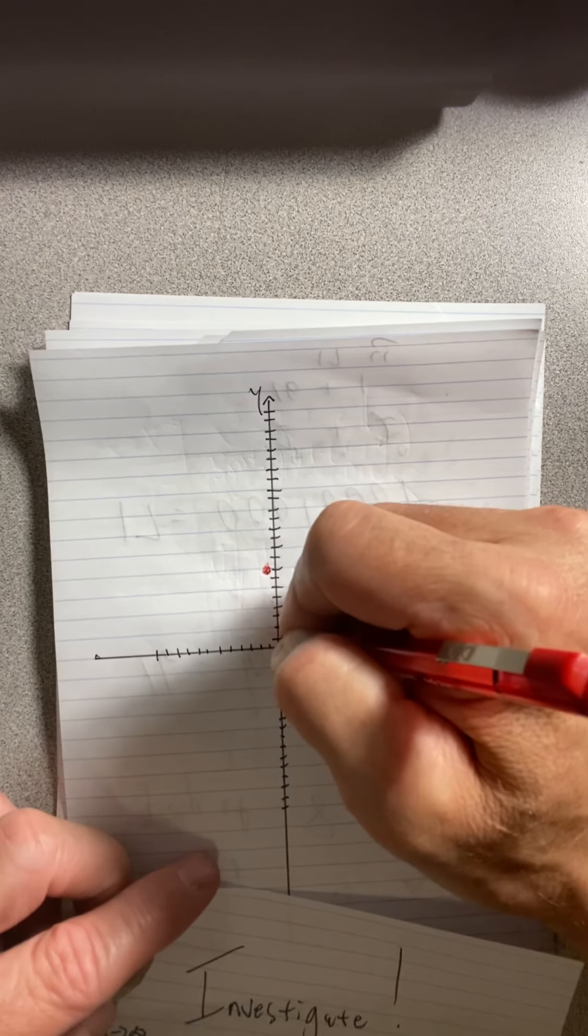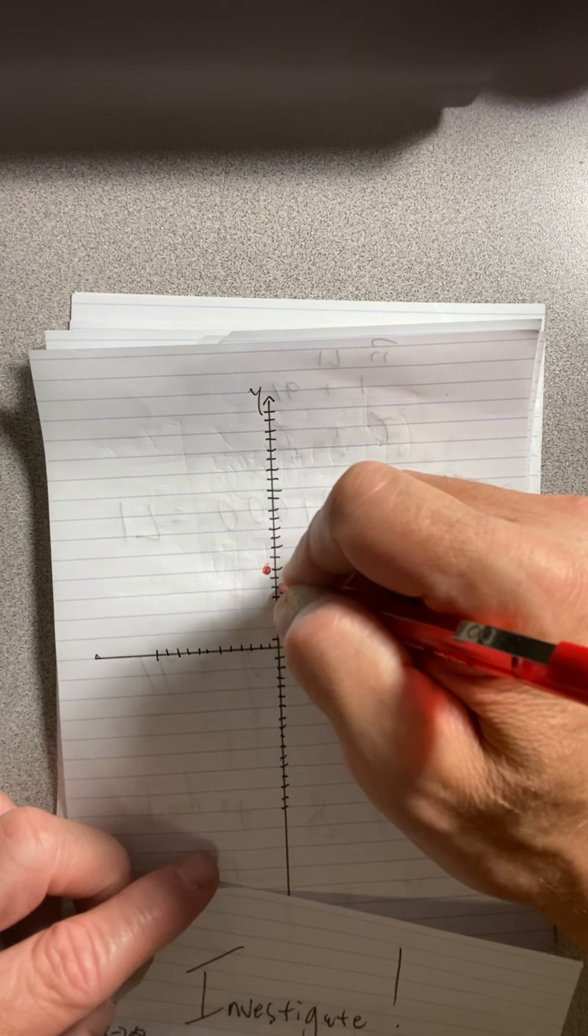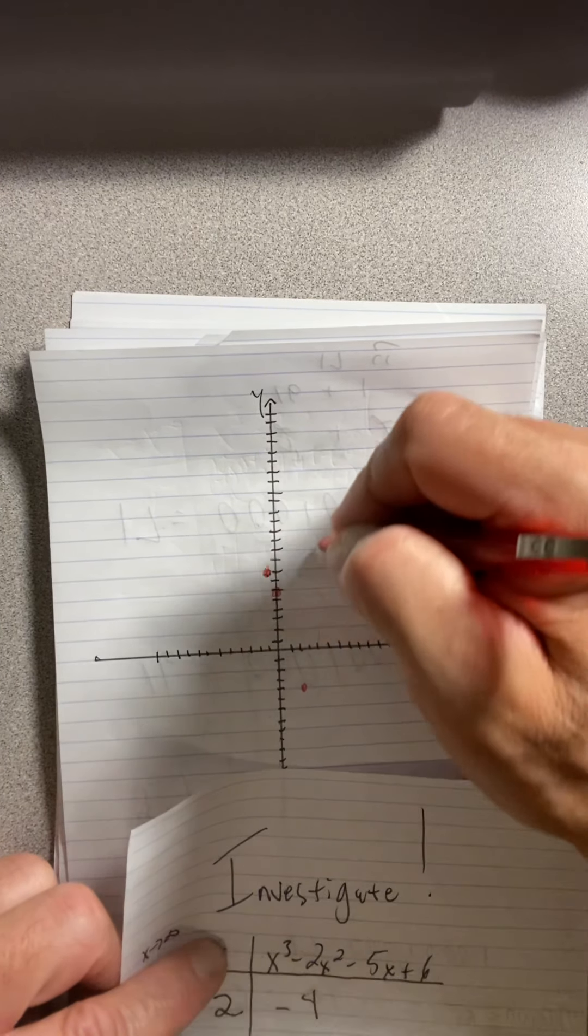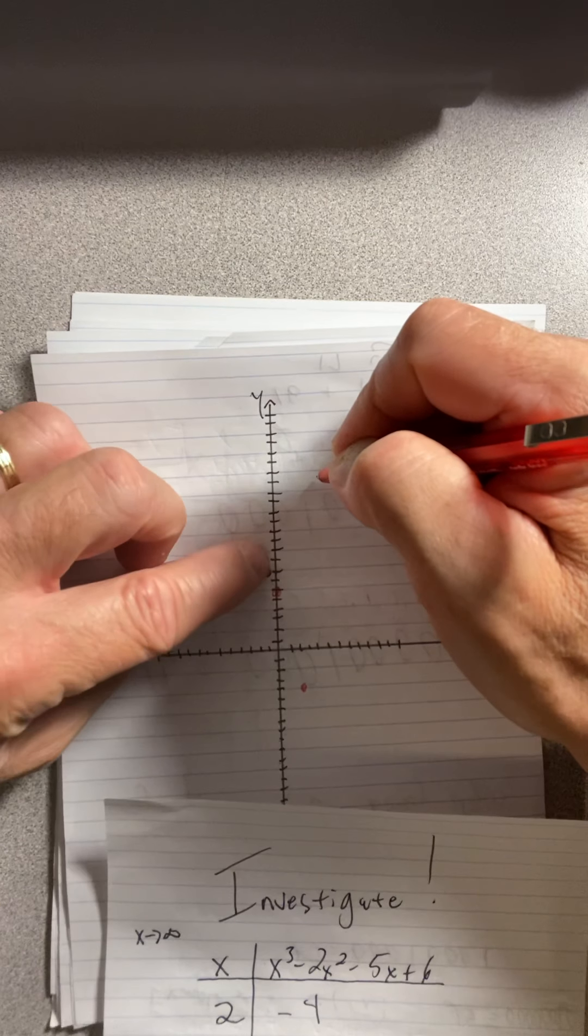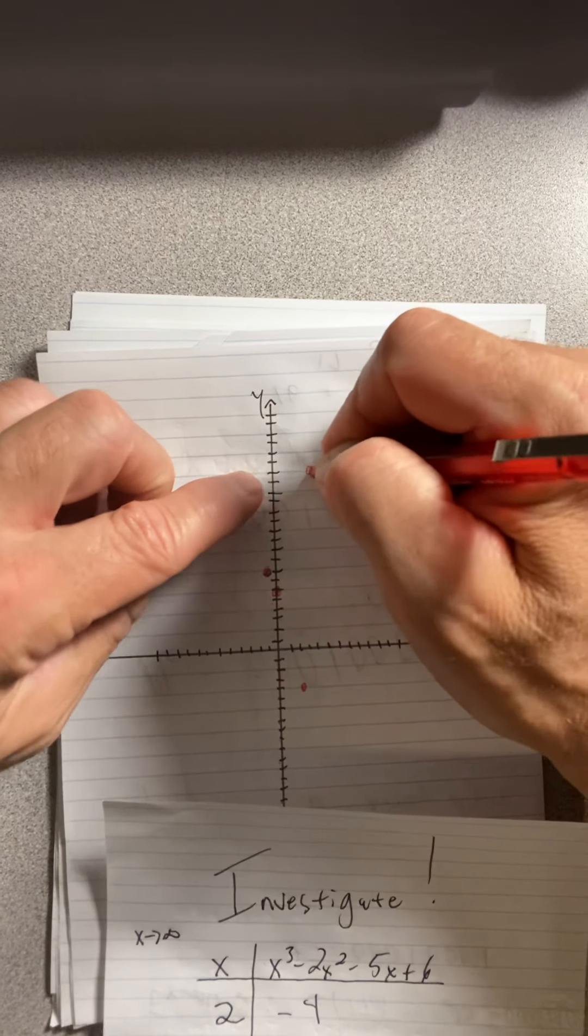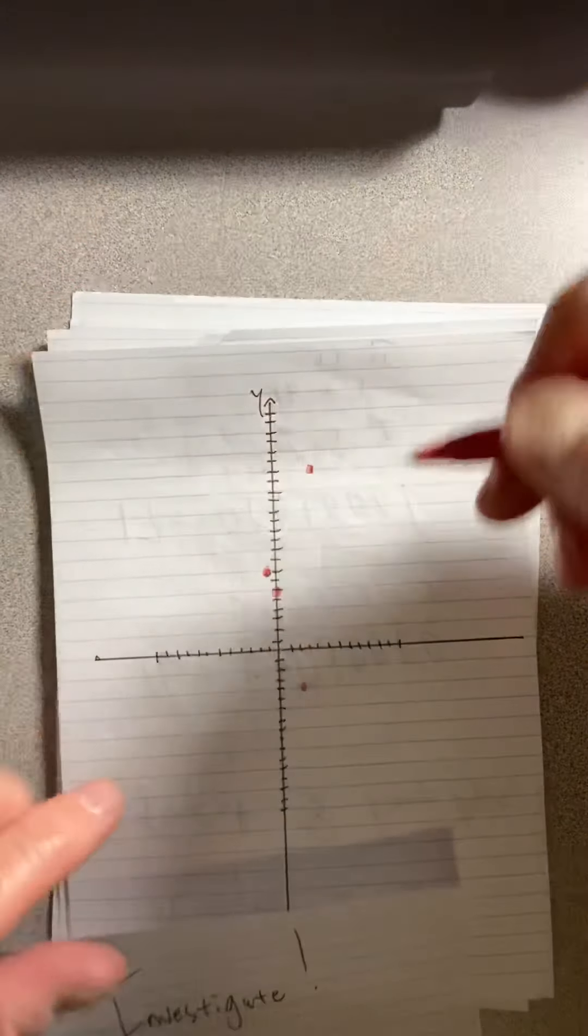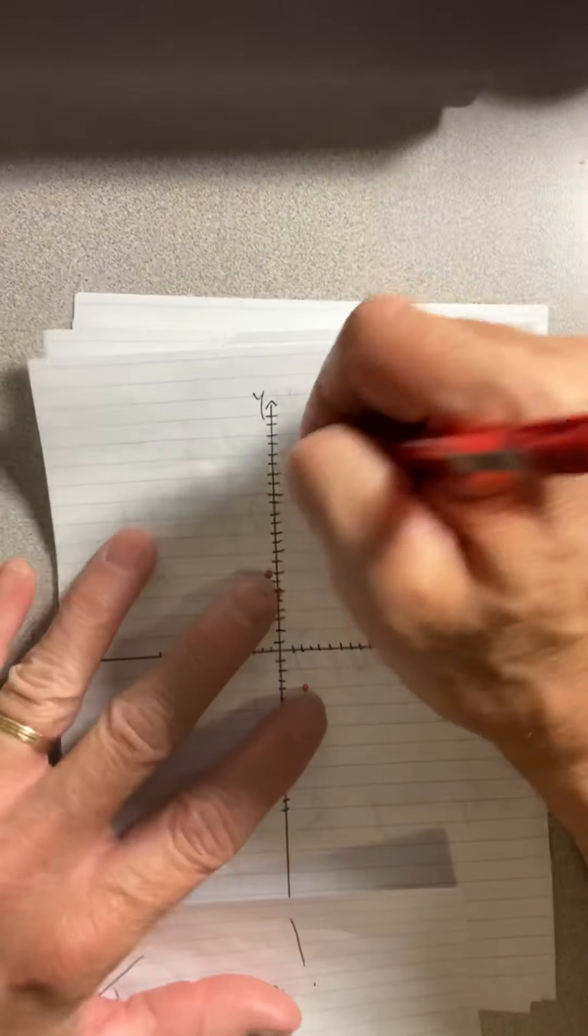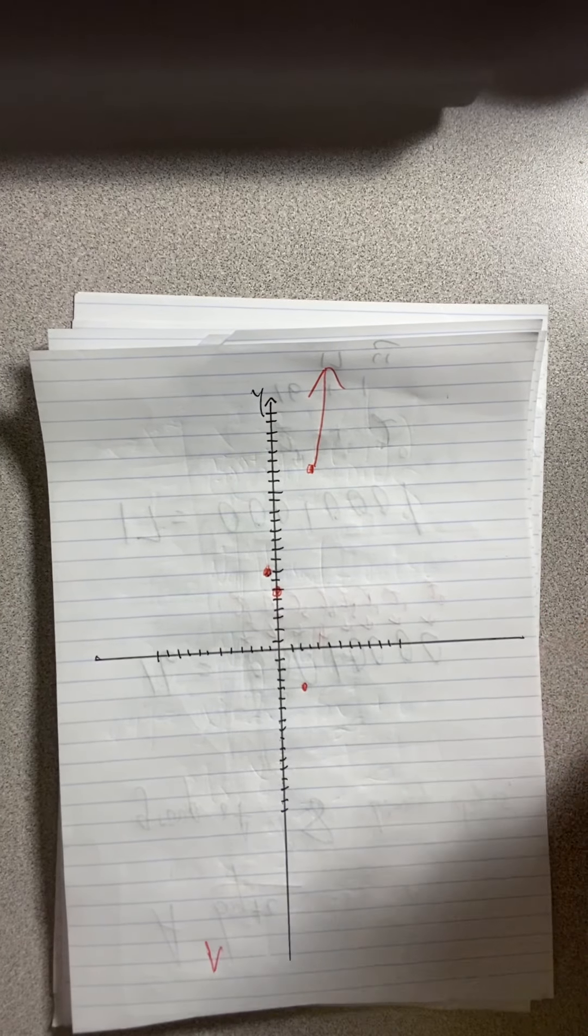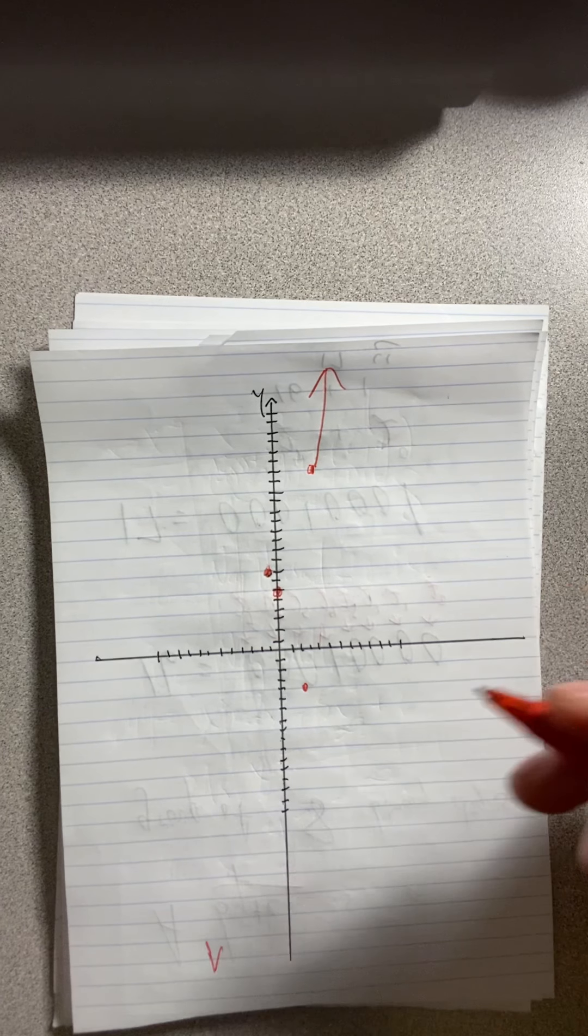At 2, it was negative 4. So we're about right here. 0, I think we said it was 6. At 4, it was 18. So at 4, it's way up here somewhere. 9, 10, 11, 12, 13, 14, 15, 16, 17, 18. At 10, it's off the charts. So it's just going off the charts from there.